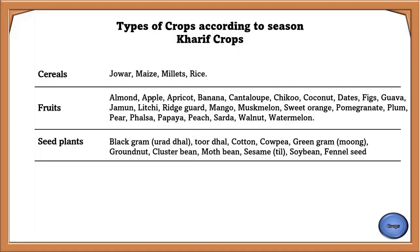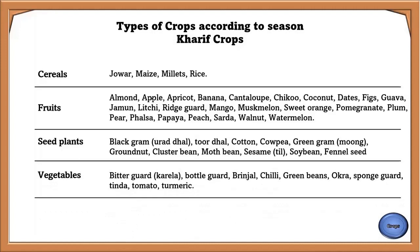Kharif vegetables include bitter gourd, brinjal, chili, green beans, okra, sponge gourd, tomato, and turmeric.